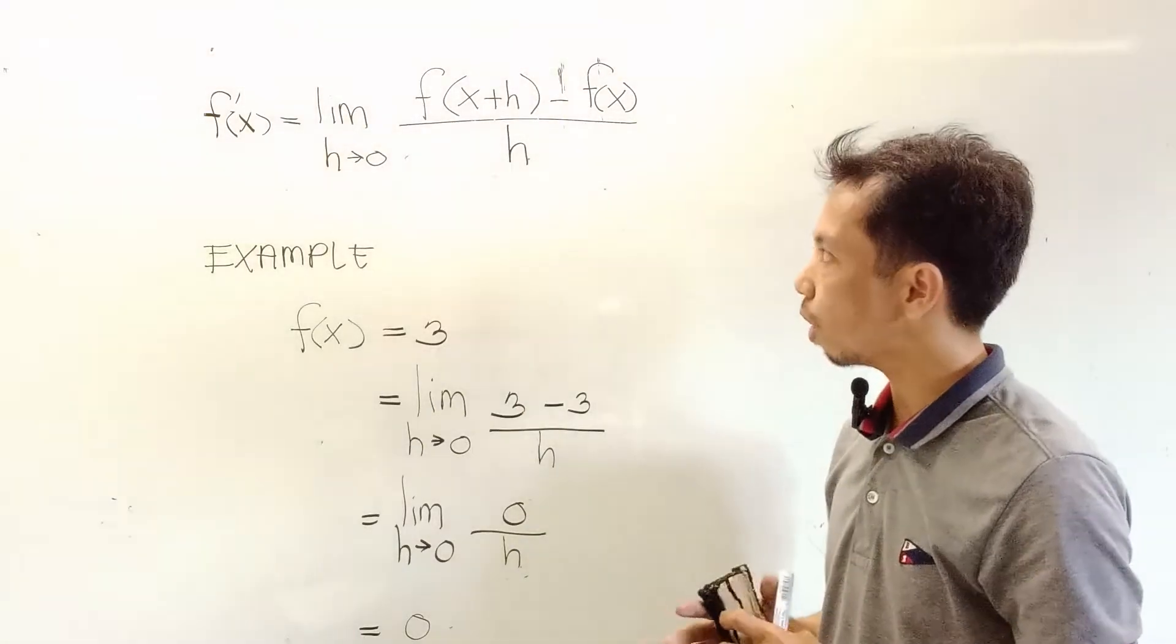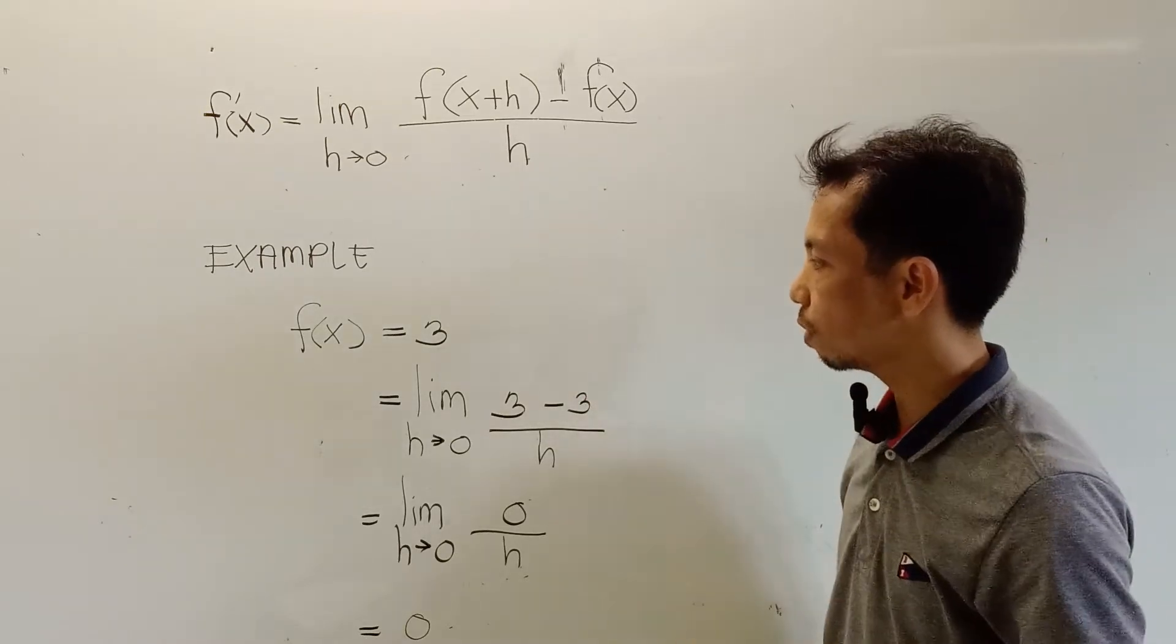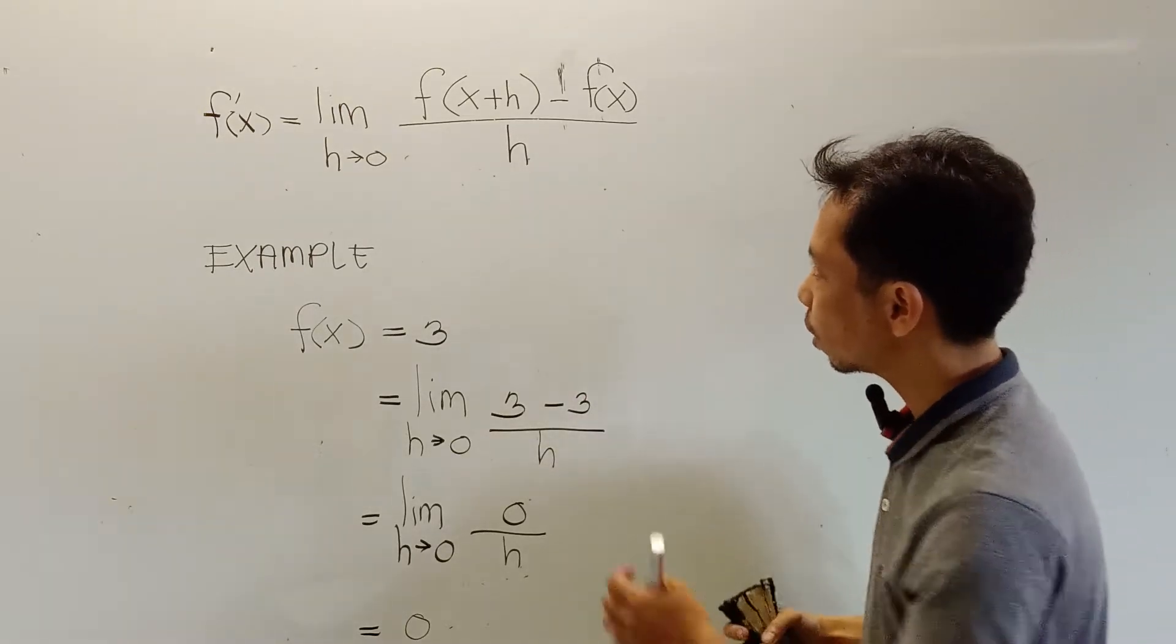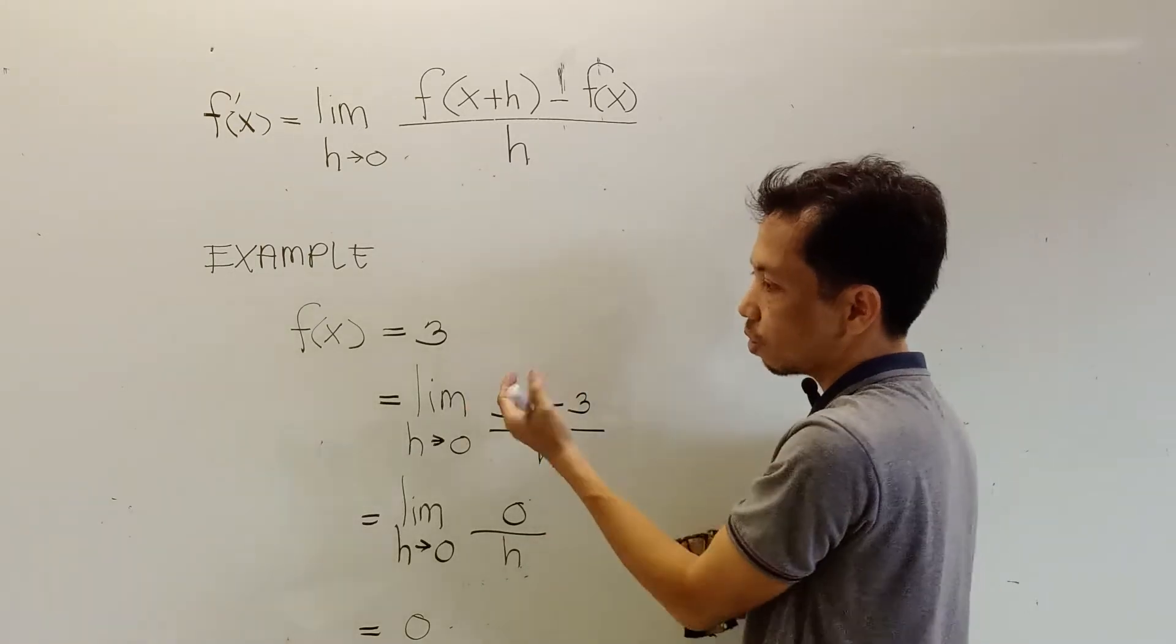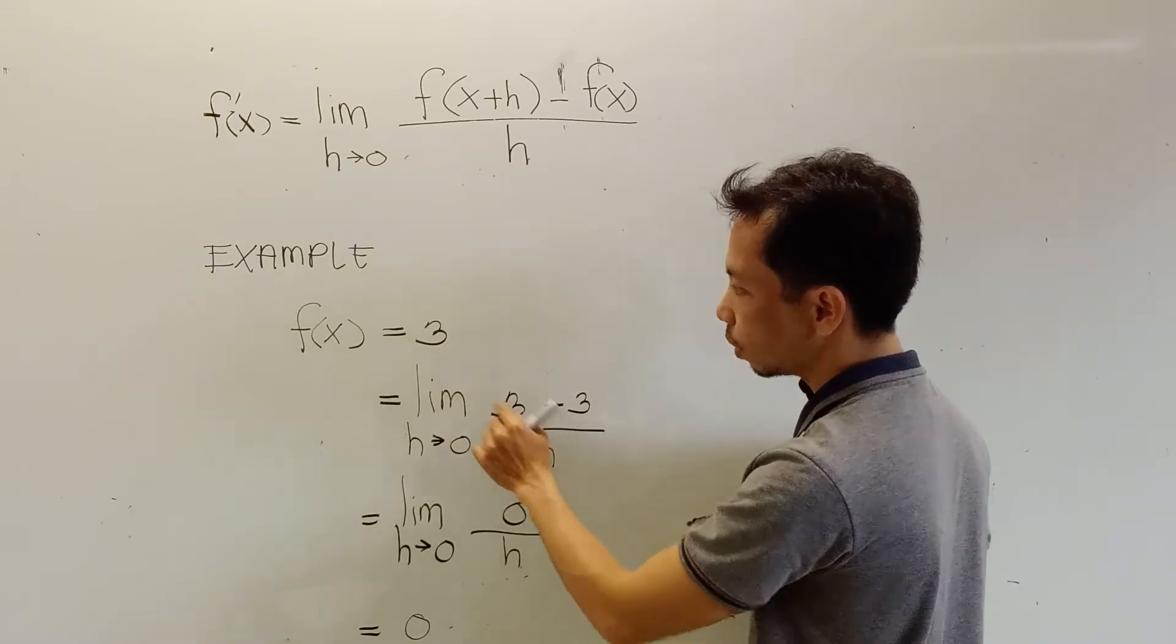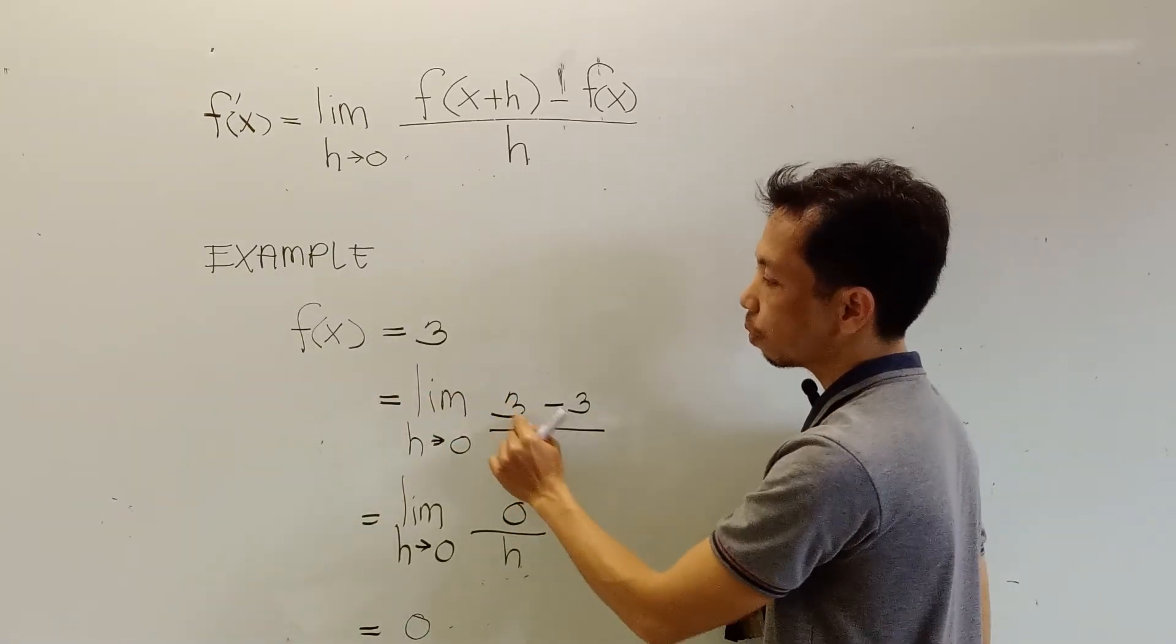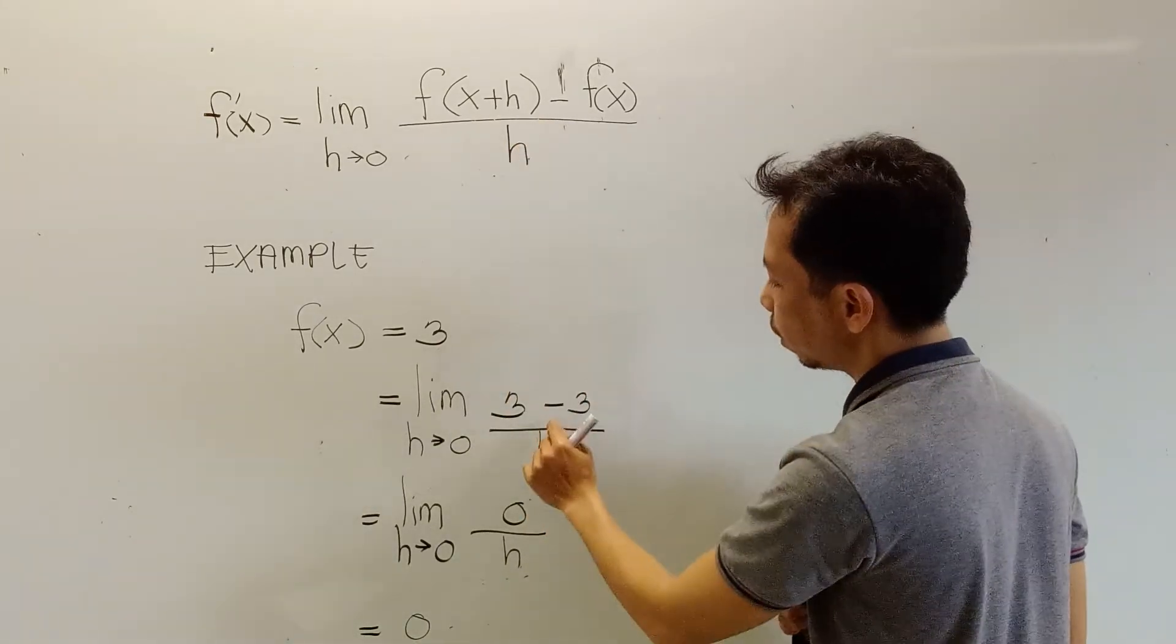So what we are going to do is still follow the process or the steps in finding the derivative. So here, instead of replacing the variable x plus h, because in this case there is nothing to replace, there is no variable, simply copy the constant here, copy the 3 here, just copy this one, minus, copy the negative sign here, minus,